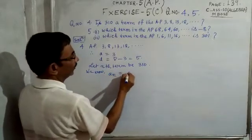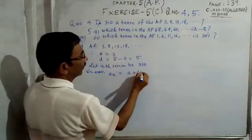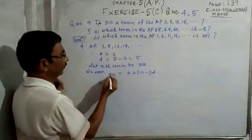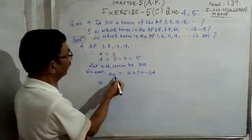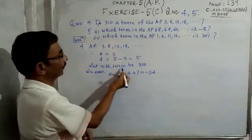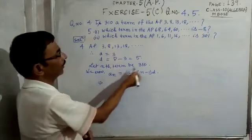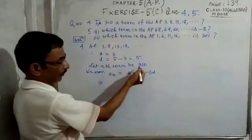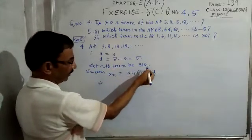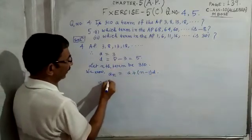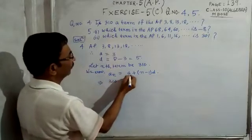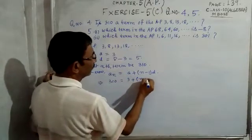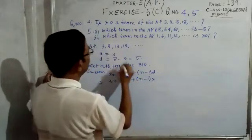We apply the nth term formula: a_n = a + (n − 1) × d. Here, a_n is the nth term, so a_n equals 310. We write: 310 = a + (n − 1) × d, where a = 3.